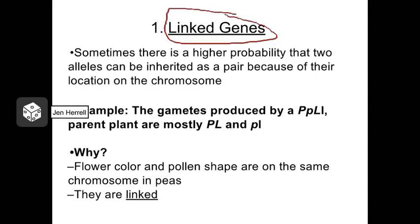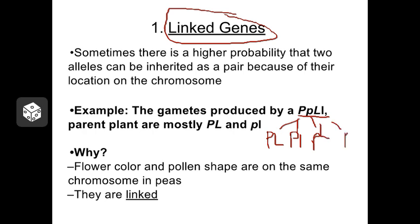Linked genes tend to travel together from parent to offspring and are not likely to be separated by crossing over. For instance, consider a pea plant with the genotype P, little p, big L, little l — in other words, it's heterozygous for two different traits. Now if we looked inside the pollen grains or the egg cells produced by this plant, we would expect to find one-fourth big P big L, one-fourth big P little l, one-fourth little p big L, and one-fourth containing little p little l, according to Mendel's rules.